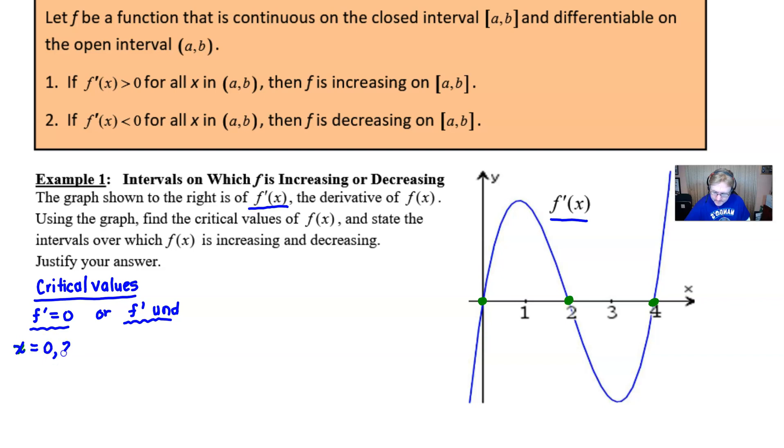And those values would be of course zero, two, and four. Now f' being undefined is something that we don't really have to worry about because this graph is continuous everywhere. There's no holes, breaks, or asymptotes, so therefore this is not going to have any more additional solutions. So we have these three critical values.